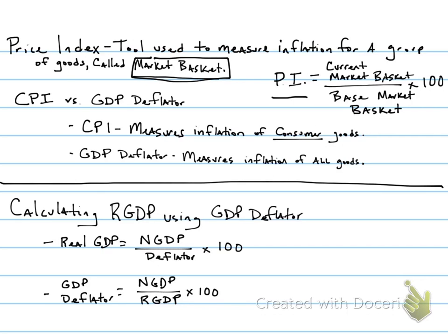The two price index tools that we use in AP Econ are the CPI and the GDP deflator. The only difference between one price index and another is going to be the group of goods that we are measuring. The CPI is measuring the inflation rate of consumer goods, so the market basket for the CPI is going to be all consumer goods — things like transportation, entertainment costs, food, and education. We measure how that group of goods changes in value over time.